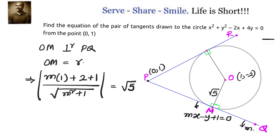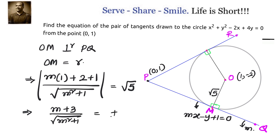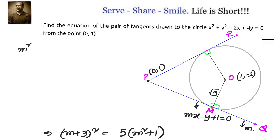Squaring both sides, (m + 3)² / (m² + 1) = 5, or (m + 3)² = 5(m² + 1). What we are going to get is a quadratic equation in m. Finding the roots of this quadratic equation will give the values of m, which ultimately gives the equations of the tangents.